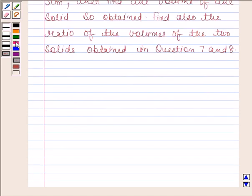Let us now begin with the solution. In question 7, we are given a right triangle ABC whose sides are 12 cm, 5 cm, and 13 cm.